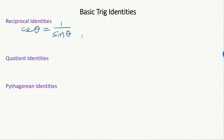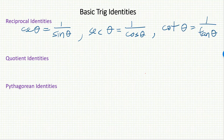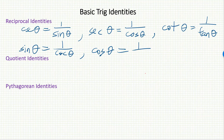Cosecant theta equals 1 over sine theta, secant theta equals 1 over cosine theta, and cotangent theta equals 1 over tangent theta. But you can also express them the other way around: sine theta equals 1 over cosecant theta, cosine theta equals 1 over secant theta, and tangent theta equals 1 over cotangent theta. These are very easy to remember as long as you know those reciprocal relationships.